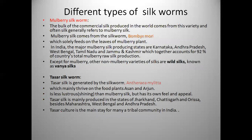The mulberry silkworm, Bombyx mori, is the most commercially important silkworm species. It feeds on the leaves of mulberry plants. In India, the major mulberry silk producing states are Karnataka, Andhra Pradesh, West Bengal, Tamil Nadu, and Jammu & Kashmir. These states account for 92% of the country's total mulberry raw silk production. Except mulberry, the other non-mulberry varieties of silk are wild silks known as vanya silks.